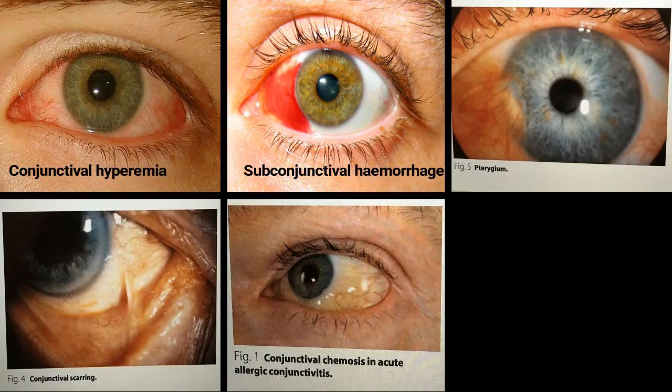The examination of the conjunctiva is continued bilaterally, noting the appearance of hyperemia, hemorrhage, foreign body, or even benign growths such as pterygium. Some examples of pathology are pictured.